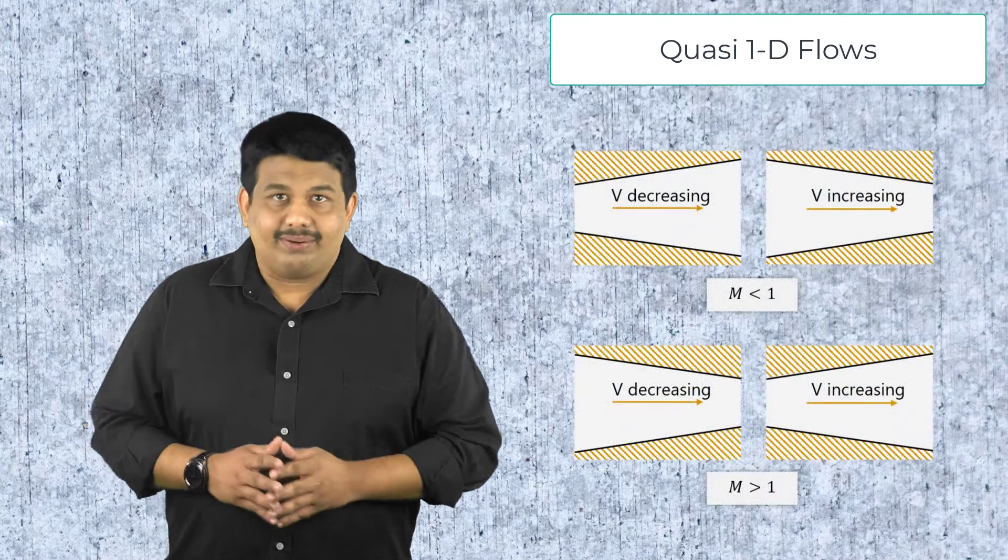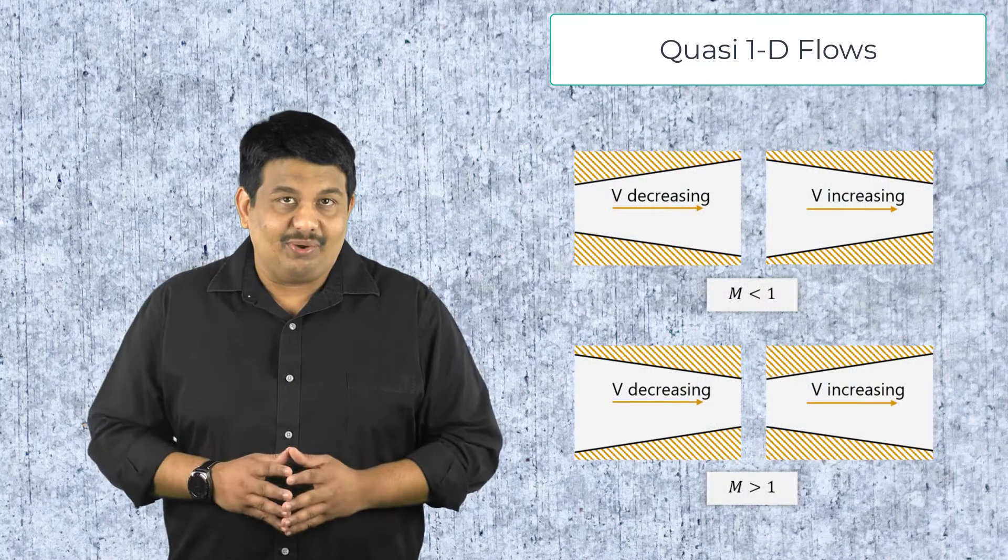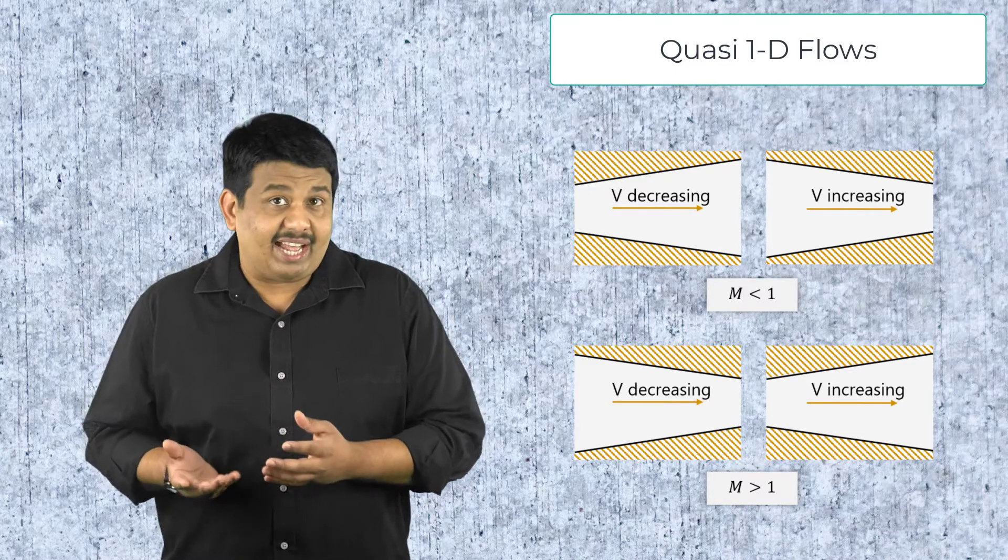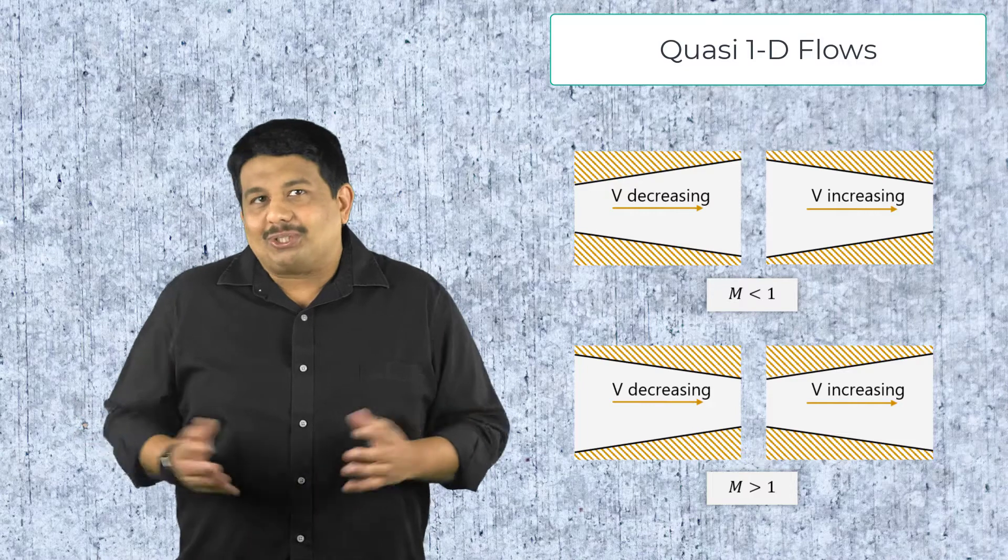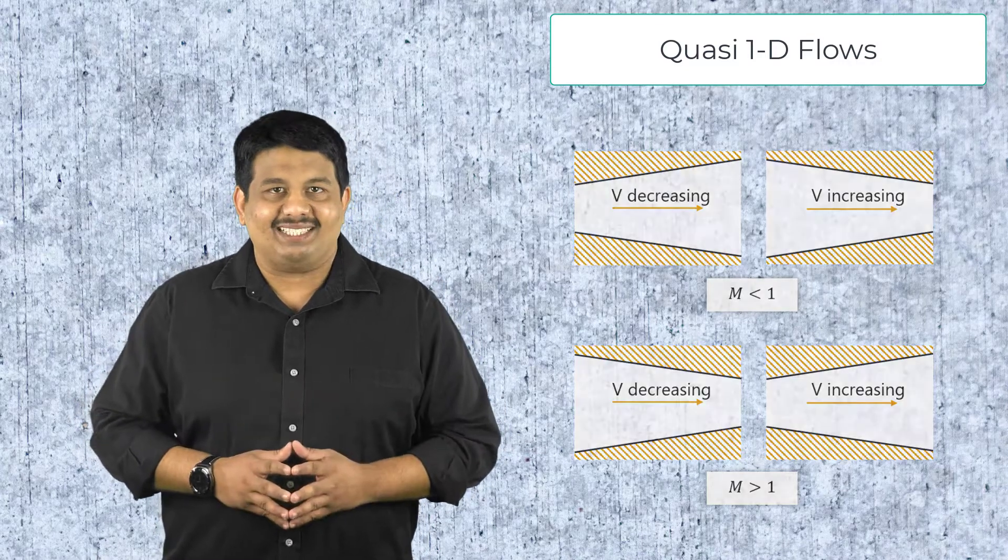Next, we studied some important aspects of quasi-1D compressible flows having variable area, such as flow through converging and diverging ducts. Here, we saw that subsonic flows accelerate through converging and decelerate through diverging passages, whereas supersonic flows decelerate through converging and accelerate through diverging passages.